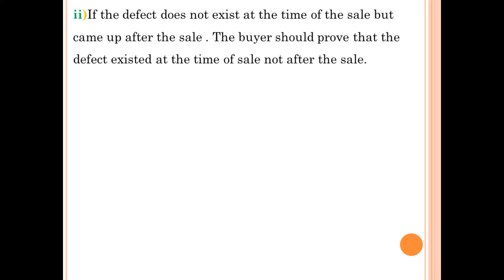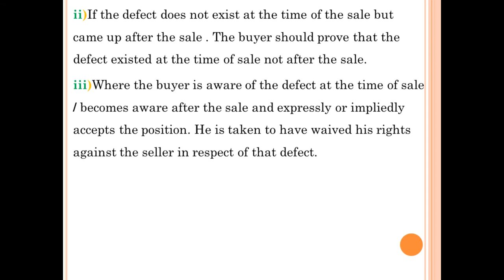Another exception is if the defect did not exist at the time of sale but came up afterwards. The buyer must prove the defect existed at the time of sale for there to be a warranty against latent defects. Also, where the buyer is aware of the defect at the time of sale, or becomes aware after the sale and expressly or impliedly accepts the position, he is taken to have waived his rights against the seller and cannot claim any remedy under latent defects.